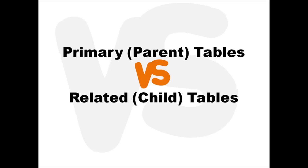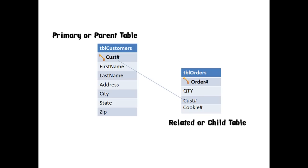Every relationship, no matter what kind, will have one primary or parent table and one related or child table. You can usually identify the primary or parent table by its primary key — if a relationship is sprouting off of that primary key, then you know that's your parent table. This is important from a data entry standpoint: Access will not let you enter information in the child table that doesn't match up to information in the parent table. You wouldn't want to type in a customer number in the orders table if you don't have that customer's information entered into the customers table. This way, our information integrity remains solid.